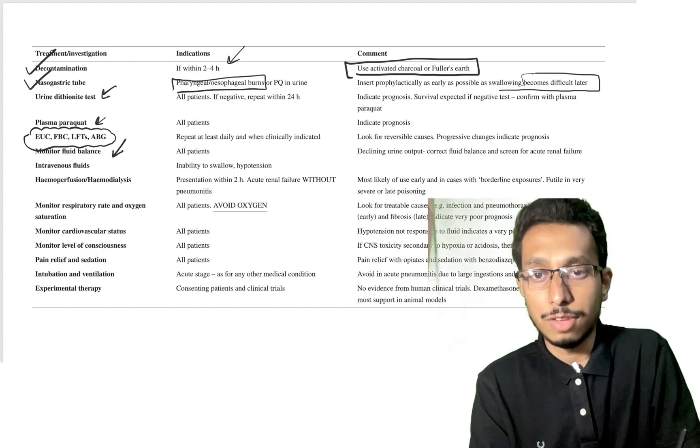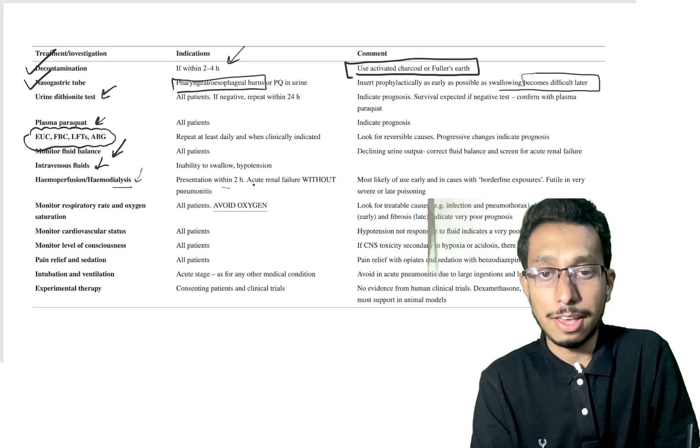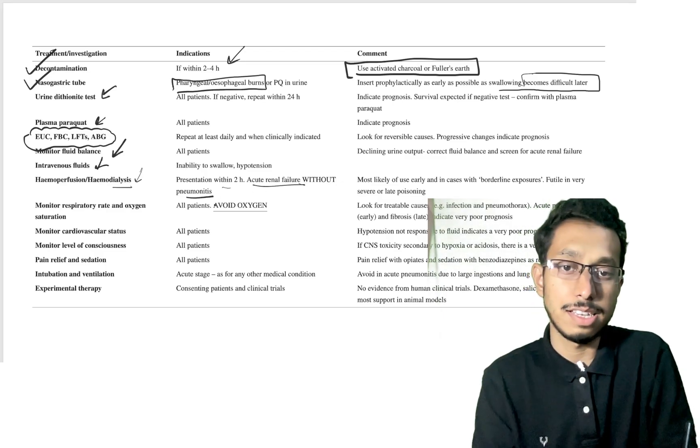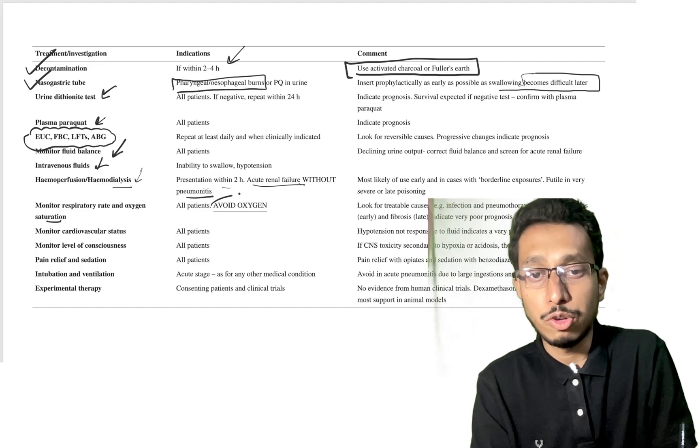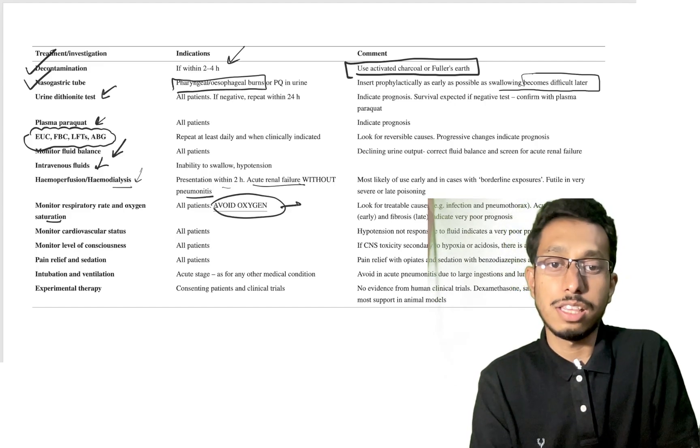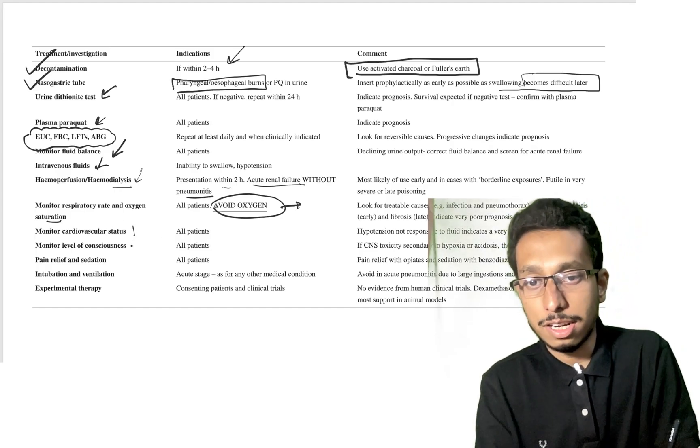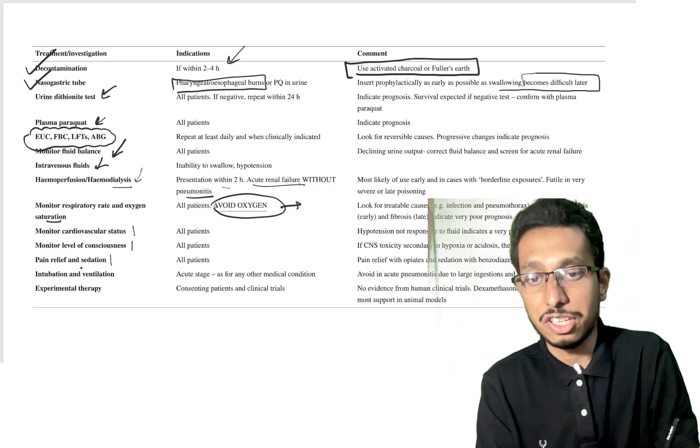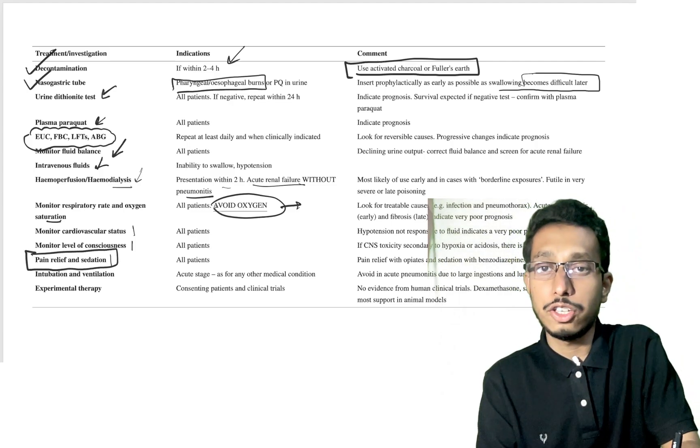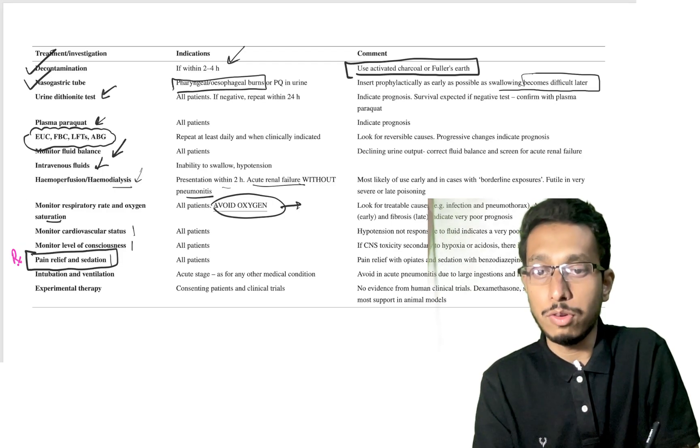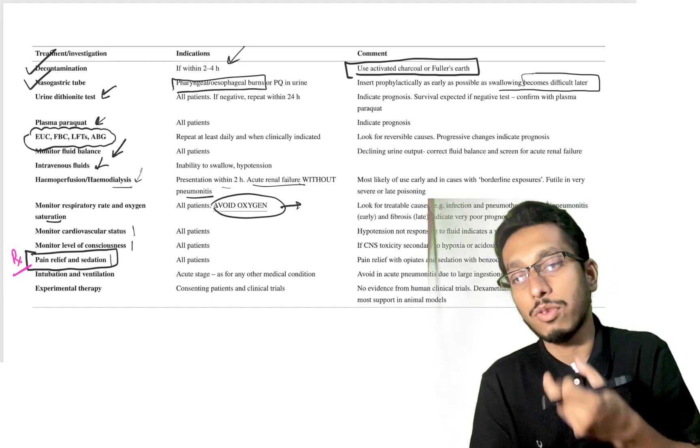Routine investigations including CBC should be done. Monitor fluid balance, IV fluids, hemoperfusion or hemodialysis as per requirement if there's acute renal failure. Monitor respiratory status and oxygen saturation, but avoid oxygen at early stage as it can progress the disease. Monitor cardiovascular status, level of consciousness, and importantly, pain relief and sedation should be addressed due to severe pain from ulceration in the esophagus, pharynx, or oral cavity.